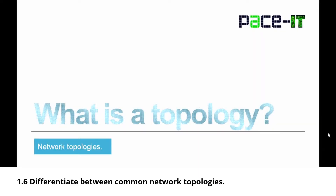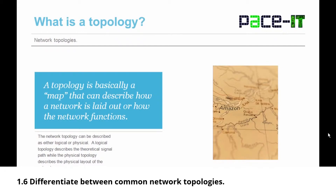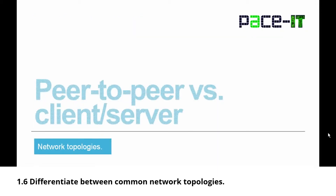So what is a topology? A topology is basically a map that can be used to describe how a network is laid out or how a network functions. A network topology can be described as either being logical or physical. A logical topology describes the theoretical signal path, while the physical topology describes the physical layout of the network. A logical and physical topology don't need to match.